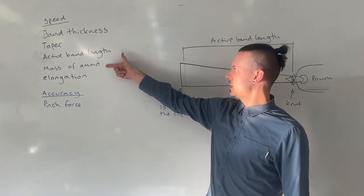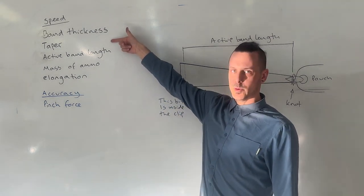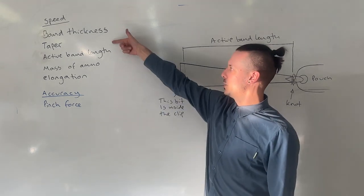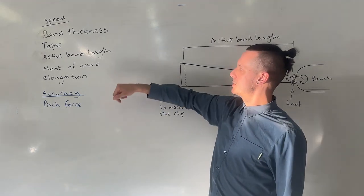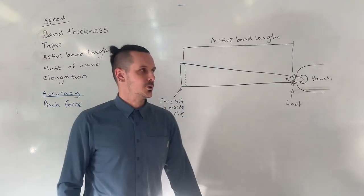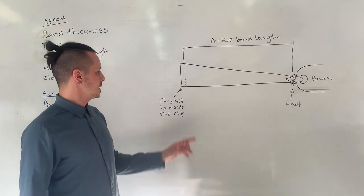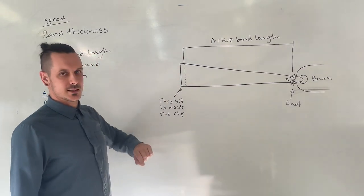Tapered bands shoot fastest. Now active band length for those of you who don't know is the bit of the band that is doing the stretching, so we've got a little bit at the end that is inside your clip or tied around your fork.